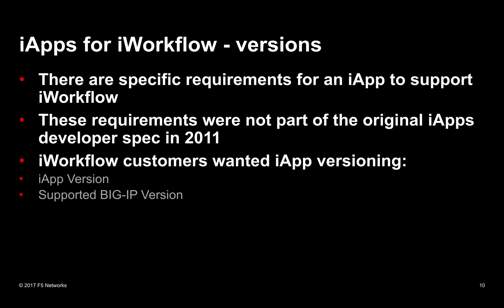So, iApps for iWorkflow — three things we need to talk about today. First, iApp versions. These are new things added since we were writing iApps for Big IP. Back in 2011, the original scope was to have them run in the GUI. Now we've got this other environment — this platform — that's far more extensible, so we've had to add in certain versioning support. There are two types of versioning: the iApp version itself, and the version of Big IP that the iApp supports.